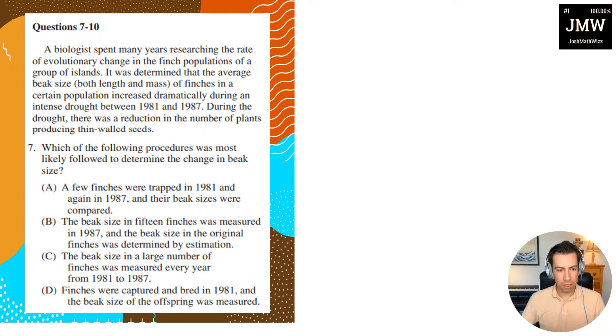So basically we have a biologist here. They spent many years researching the rate of evolutionary change in finch populations of a group of islands. It was determined that the average beak size, both length and mass of finches in a certain population, increased dramatically during an intense drought between 1981 and 1987. During the drought there was a reduction in the number of plants producing thin-walled seeds.